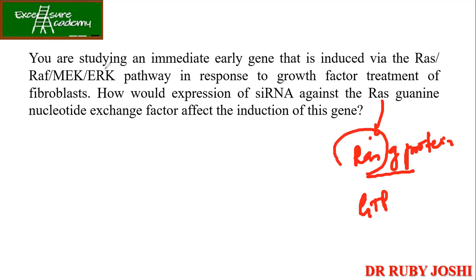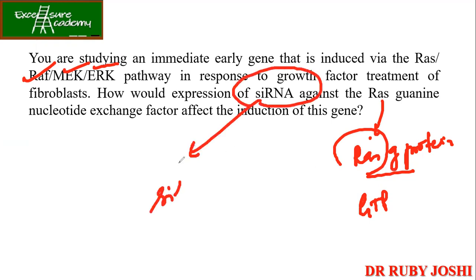GTP is required for Ras to get activated. Once Ras is activated, only then are Raf, MEK, and ERK getting activated, continuing the signaling pathway. So GTP is required for Ras activation. Now if you use siRNA — which is used for silencing — against the guanine nucleotide exchange factor, it is going to inhibit the induction of the immediate early gene. This is a very simple answer.